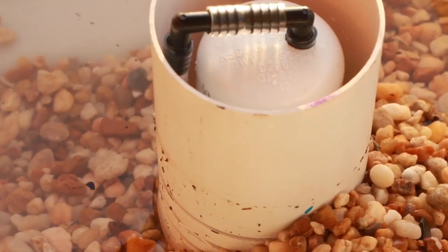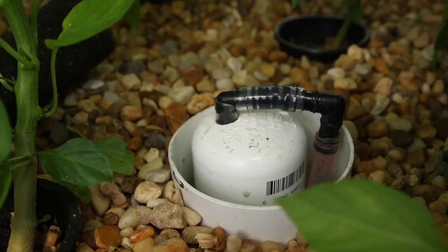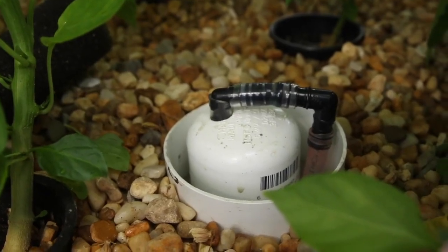The bell siphon regulates the flow of water out of the grow bed and controls the ebb and flow cycle.